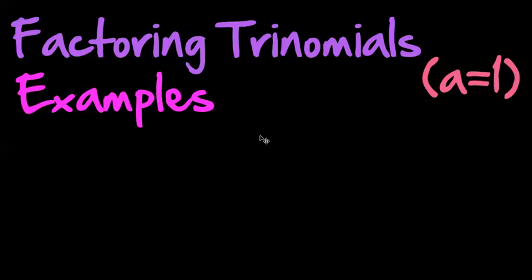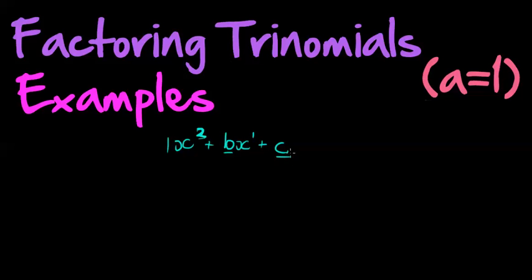Hi there and welcome back. I promised you in the previous video that I'd show you examples of factorizing trinomials that will blow your mind at how simple factorizing trinomials actually is. What I said was that if we have an expression with three terms, with a coefficient of one for the leading term — the term with the highest exponent, in this case x squared — then if the middle exponent is half of the highest, we have a trinomial we can factorize by putting it into two brackets.